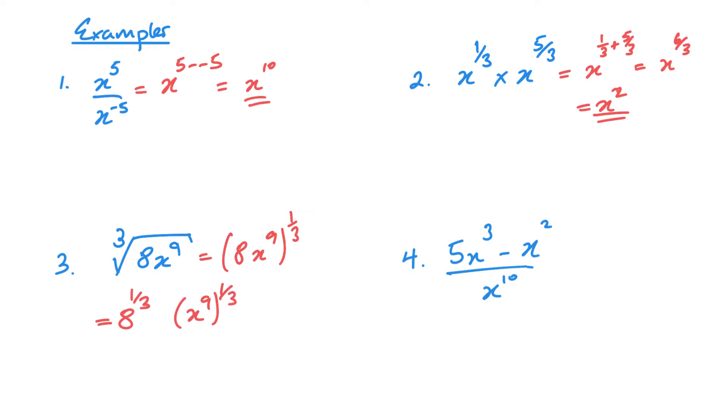Now remember when you're dealing with this, you're multiplying these powers. So 9 times a third is going to be 3. So that means x to the power of 3. And the cube root of this 8 here is going to be 2. So 2x cubed.